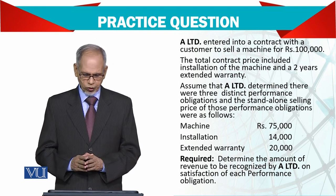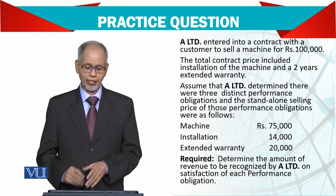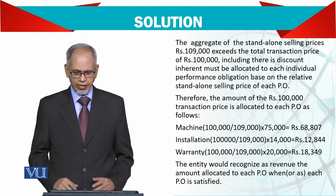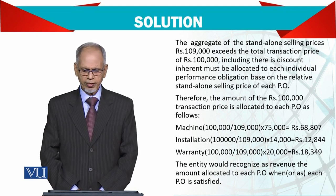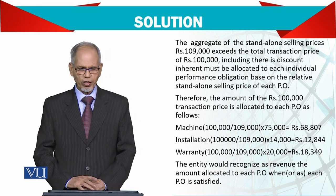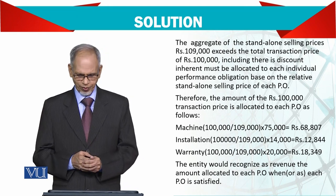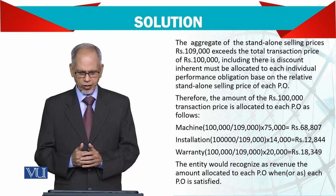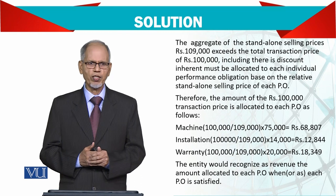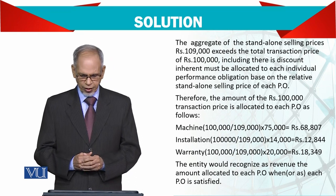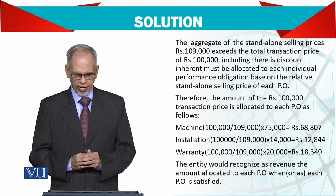The aggregate stand-alone selling price comes to £109,000, which exceeds the total transaction price of £100,000. This means a discount is being given when the customer takes the full package. That discount must be allocated to each individual performance obligation based on the relative stand-alone selling price of each obligation. Therefore, the £100,000 transaction price is allocated to each performance obligation as follows.